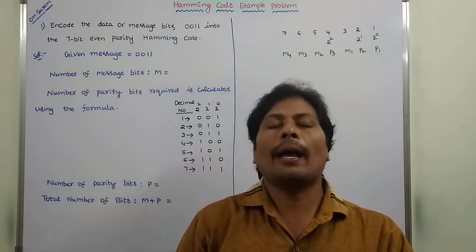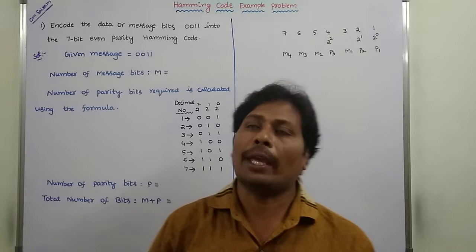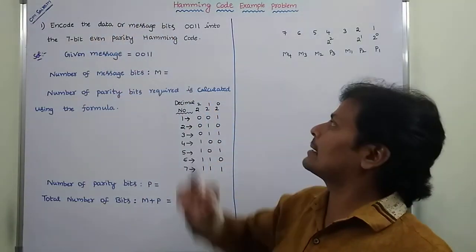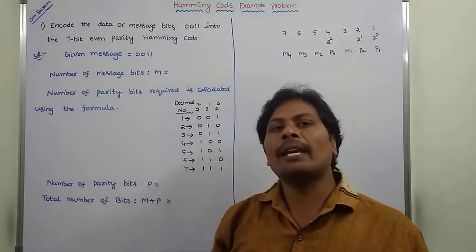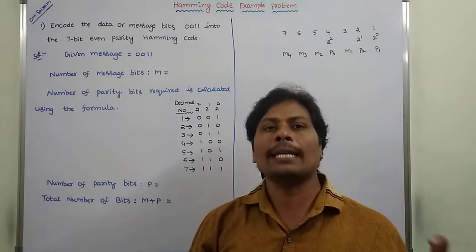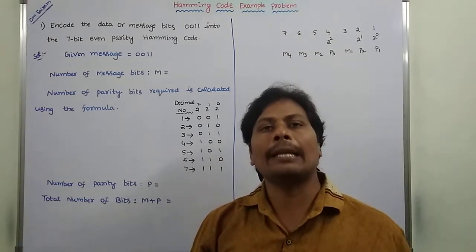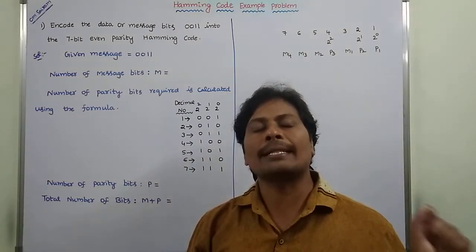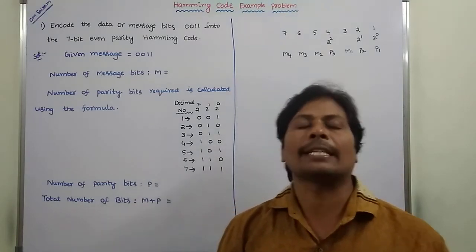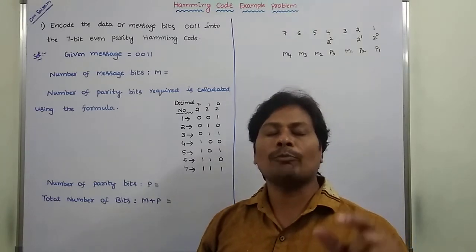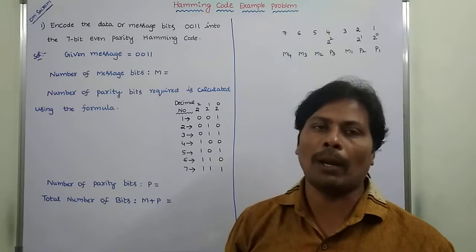Hi friends, today I am giving a lecture on an example problem on Hamming code. The problem is: encode the data or message bits 0011 into the 7-bit even parity Hamming code. In the previous video, we already discussed what Hamming code is, how to detect a single bit error, how to calculate the parity bits, how many parity bits are required, and how to correct the error. Now we will concentrate on this example problem.